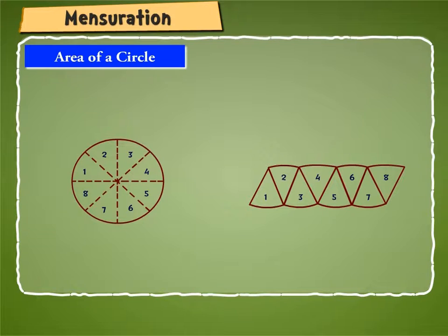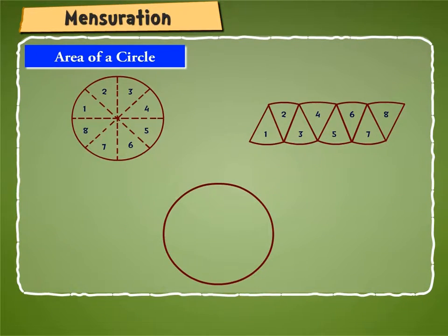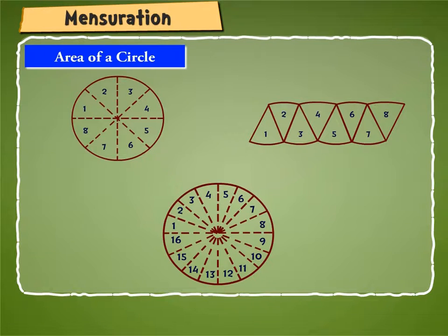Arrange these sectors as shown in the second figure shown on the screen. Now if you take another congruent circle and divide it into 16 equal sectors as shown in the given figure.